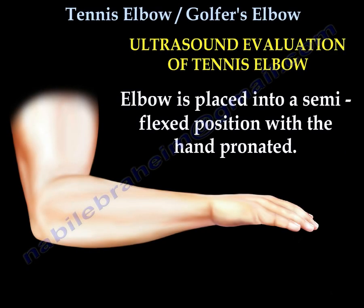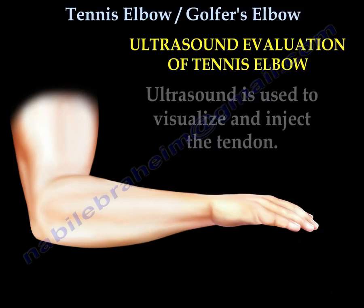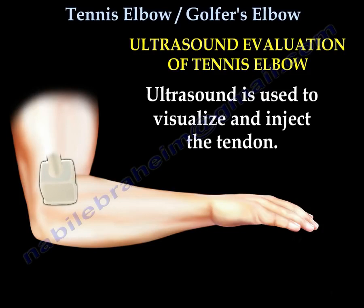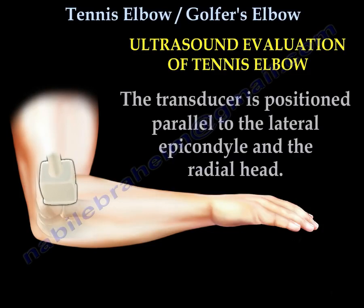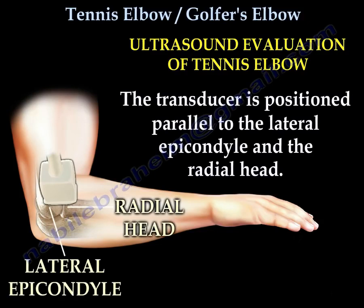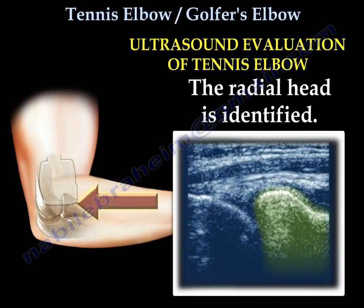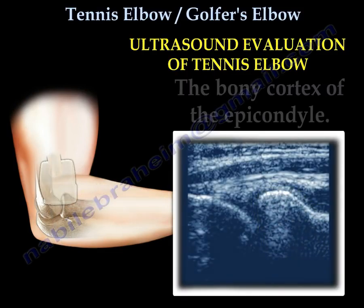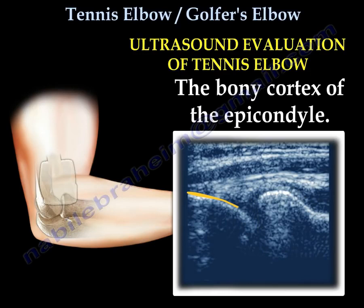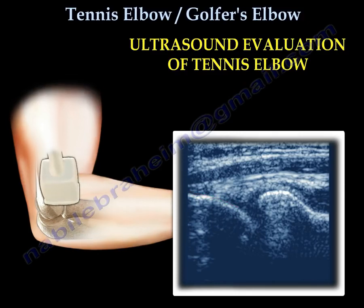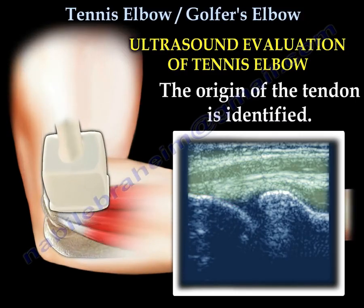Ultrasound evaluation of tennis elbow: the elbow is placed into a semi-flexed position with the hand pronated. Ultrasound is used to visualize and inject the tendon. The transducer is positioned parallel to the lateral epicondyle and the radial head. The radial head is identified, then the bony cortex of the epicondyle — which is usually very smooth — is identified, followed by the origin of the tendon.